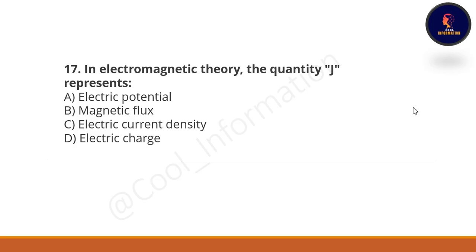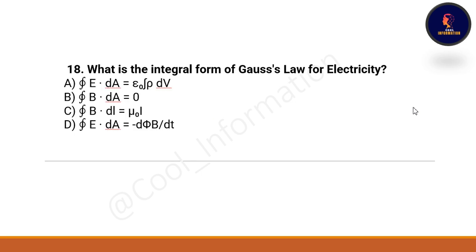Seventeenth question: in electromagnetic theory, the quantity J represents what? Option A: electric potential. Option B: magnetic flux. Option C: electric current density. Option D: electric charge. The correct option is electric current density.